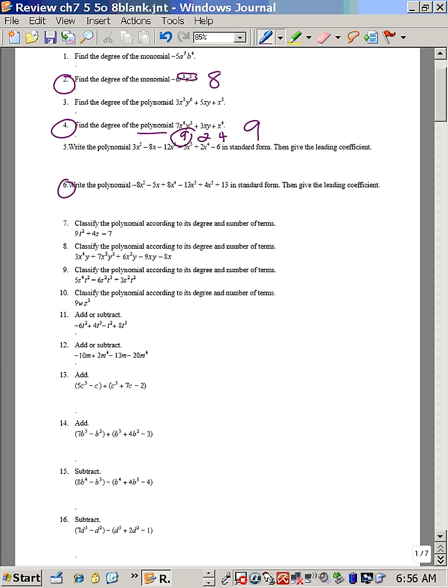Number six, we need to write this in standard form. In order to write it in standard form, you have to take the highest exponent and put it first. That would be 4x to the fifth. The second one would be the fourth power, which is 8x to the fourth. The third term would be minus 13x to the third. The next term is 8x squared minus 5x, and then the constant goes on the end, which is plus three. The leading coefficient would be 4, which is the coefficient with the highest exponent.